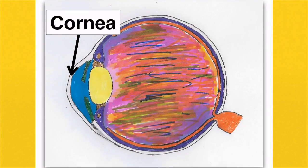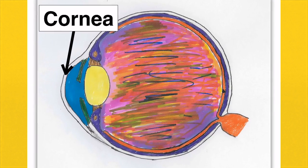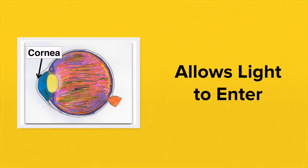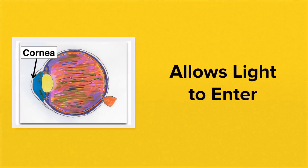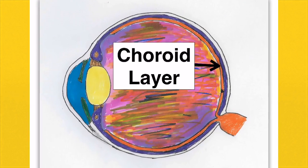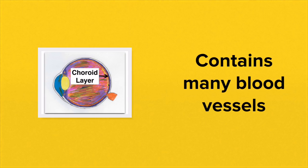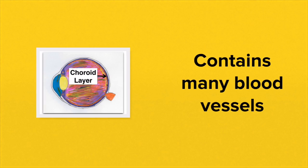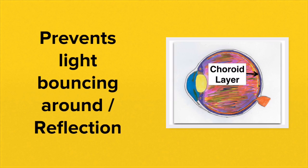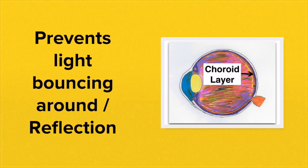As we go around to the front of the eye, we come to a transparent layer known as the cornea. The cornea allows light to enter the eye. The middle layer of the inside of the eye is known as the choroid layer. The choroid layer contains many blood vessels and is also responsible for absorbing any stray light and preventing it from bouncing around within the eye.